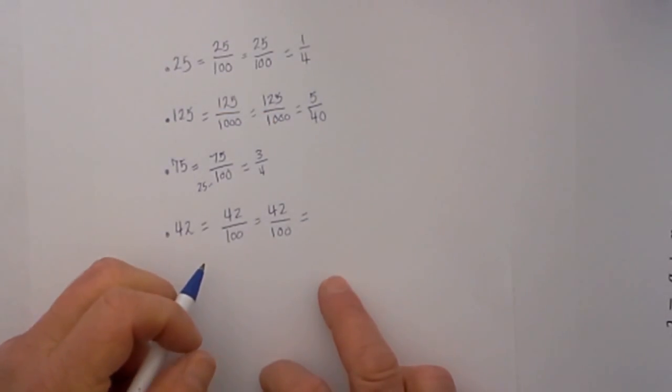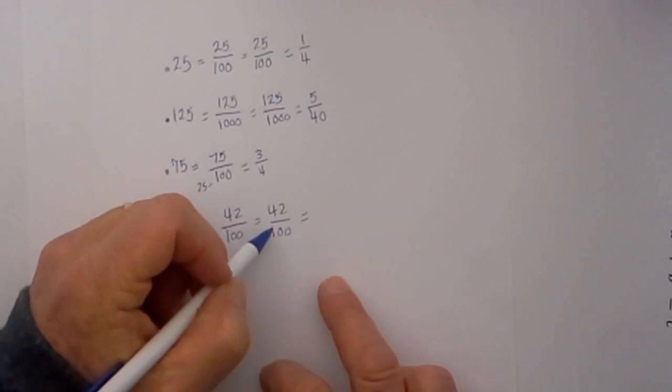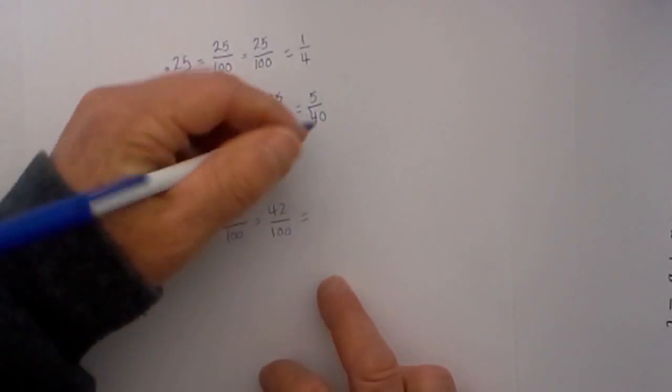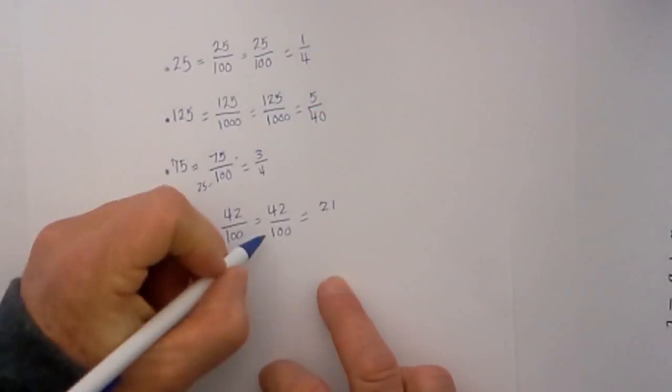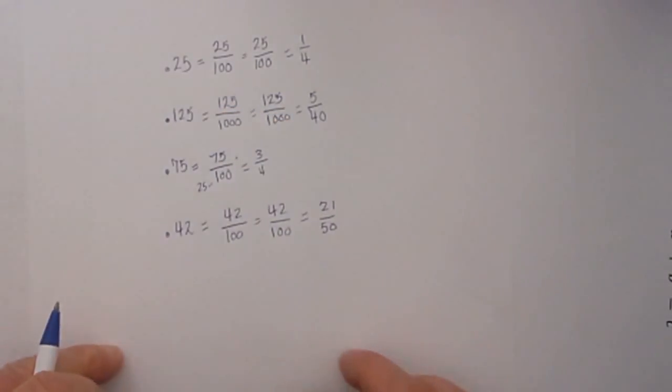Well this is kind of - I know that 2 will go into both numbers, so I will go 2 into 42 is 21 and then 2 into 100 is 50. Okay, so there we go, that's converting a decimal to a fraction.